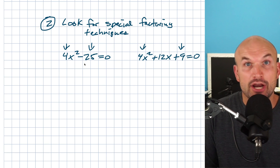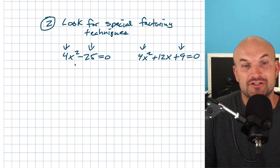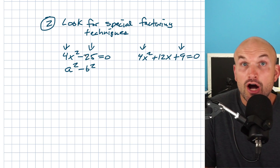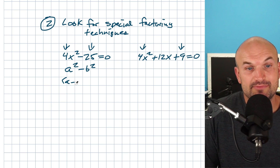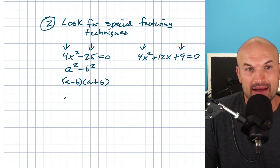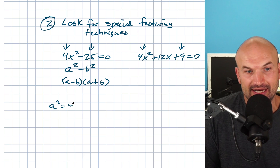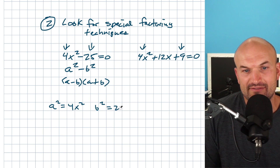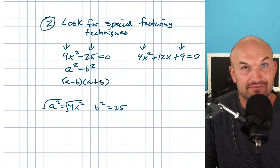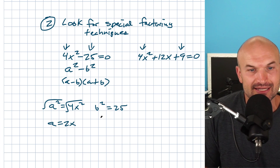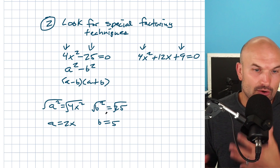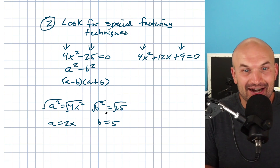In this first example, you have a square term minus another square term, so that is always going to factor as the difference of two squares. You don't need the quadratic formula or inverse operations here. You can factor this as A minus B times A plus B. To identify A and B: if A squared equals 4x squared and B squared equals 25, then taking the square root gives A equals 2x and B equals 5. And it's always going to be A minus B times A plus B, so the plus or minus is already taken care of in this situation.